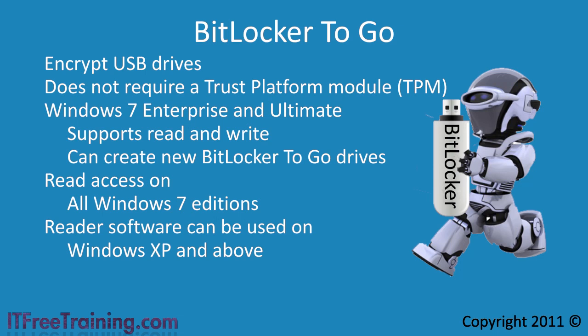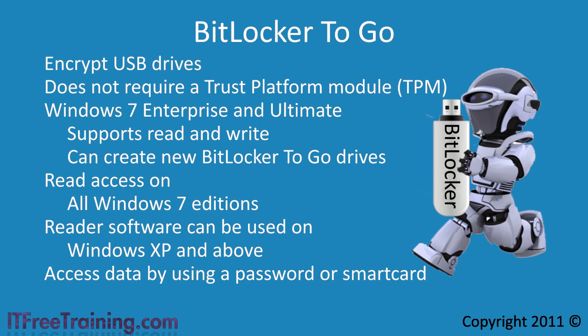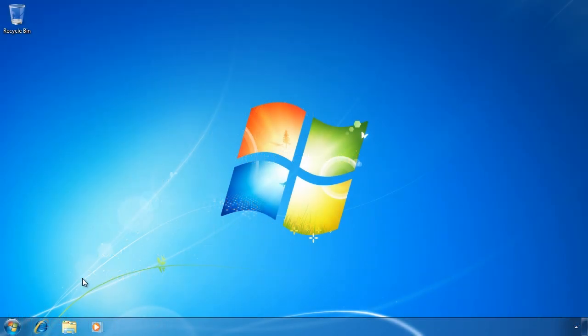BitLocker also encrypts all the data on the USB drive so it cannot be read by a third party. To access the information on the USB drive you need to use a password or a smart card. This allows the USB drive to be used on any computer without the need for special hardware such as a TPM chip. I will now change to my Windows 7 computer to see how to use BitLocker To Go on a USB thumb drive.